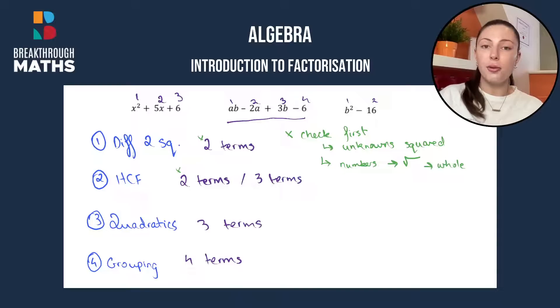So you have to check that all of your numbers you can get the square root and it's a whole number and that your unknowns are all squared. If any of these two conditions is not fulfilled then you know it must be highest common factor.